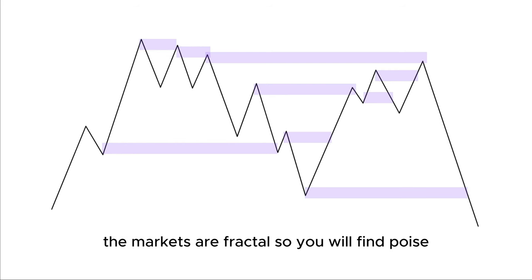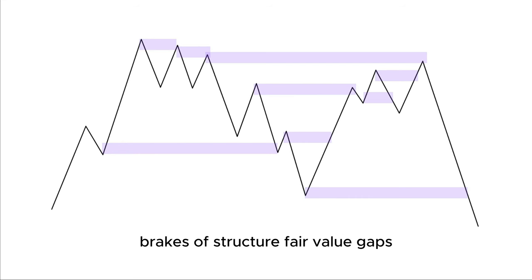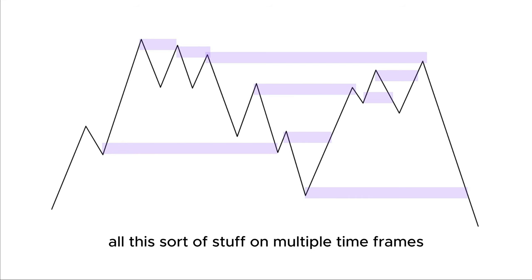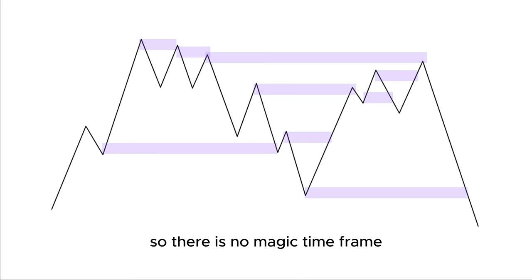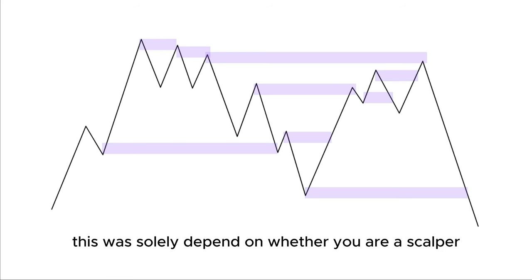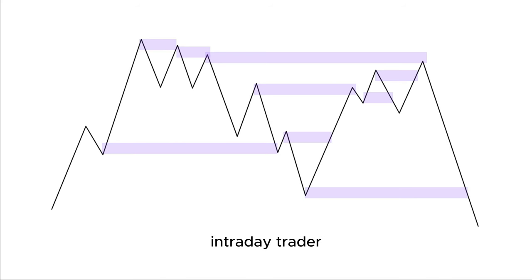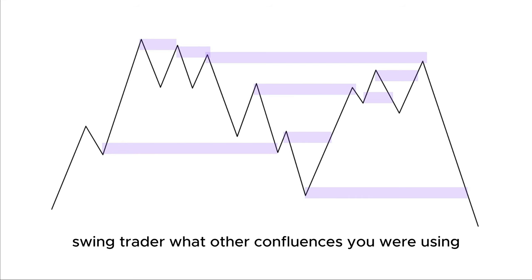Quite simply, the markets are fractal. You will find POIs, breaks of structure, fair value gaps, and candle patterns on multiple time frames. But one important thing to understand is the higher time frame holds much more weight and significance than the lower time frames. There is no magic time frame to be looking for your POIs — this will solely depend on whether you are a scalper, intraday trader, or swing trader, and what other confluences you are using.